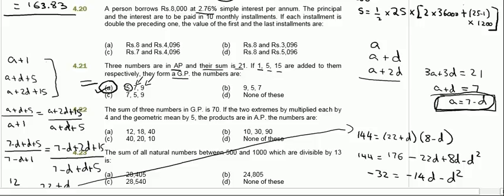Moving on to 4.22: the sum of three numbers in geometric progression is 70. If the two extremes are multiplied each by 4 and the geometric mean by 5, the products are in arithmetic progression. Find the numbers.